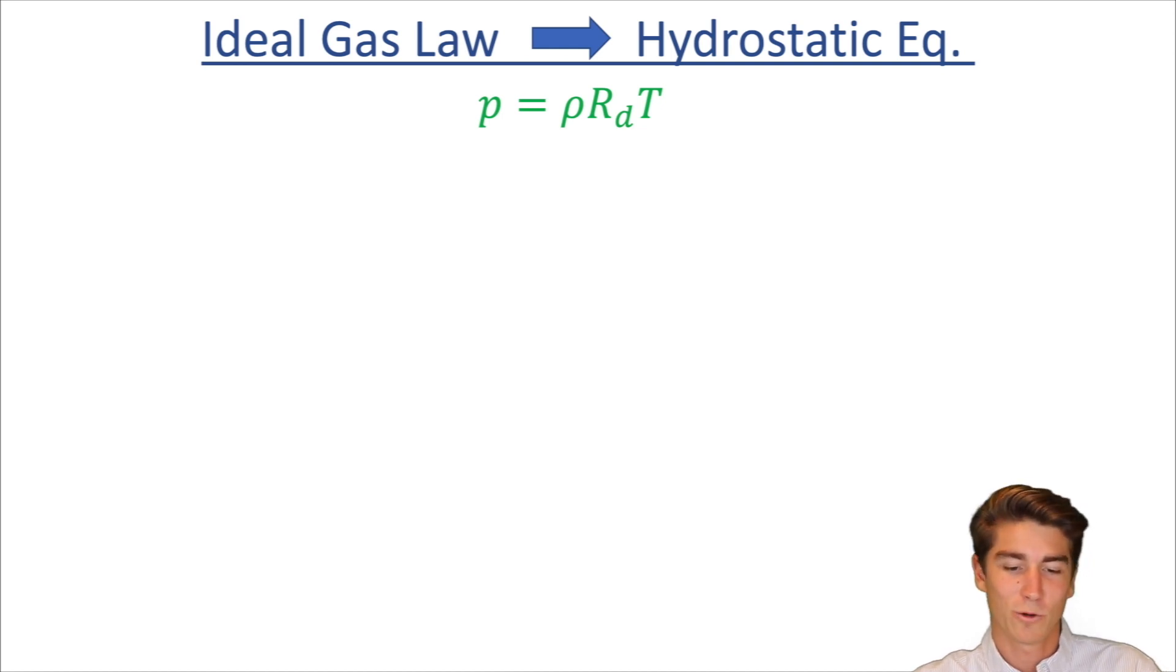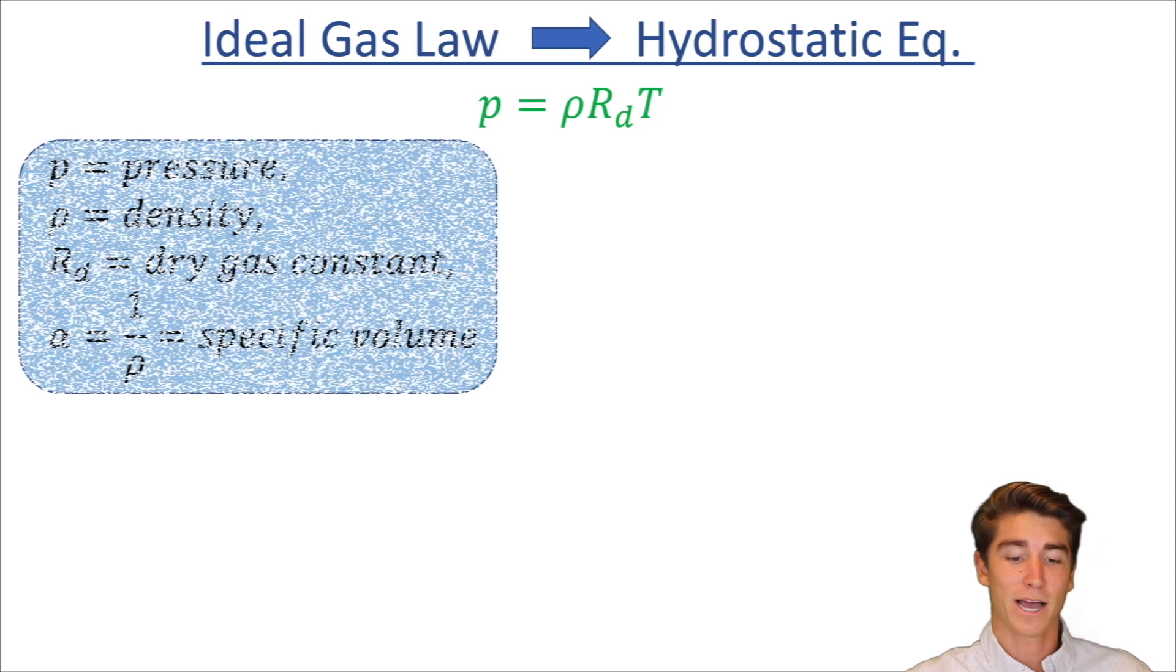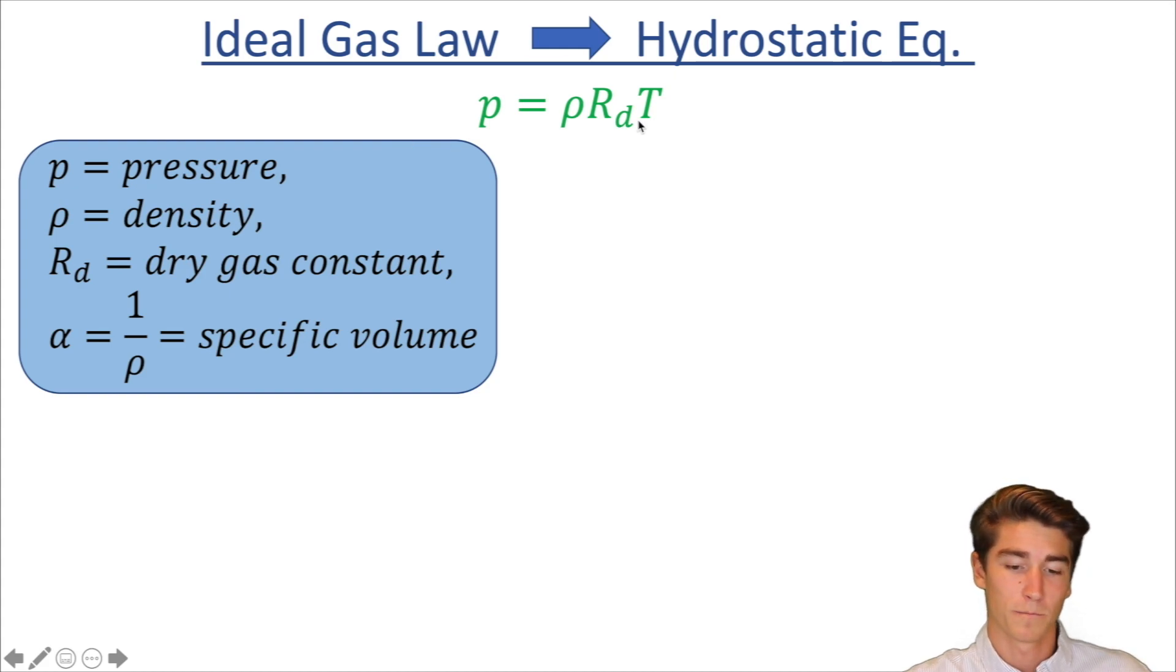Now I'll just go over this part really quickly because I actually haven't used this too much in the different homework problems that we've been using but you will see it sometimes so it's important to understand that you can also get the hydrostatic equation from the ideal gas law. The ideal gas law being p equals rho rt. You know t is temperature, p equals pressure, rho equals density, rd is the dry gas constant and this guy here, that's a sigma, equals one over rho and that's specific volume.